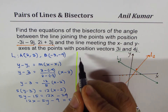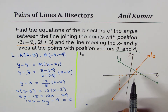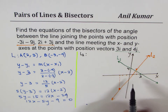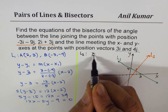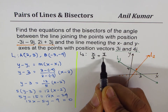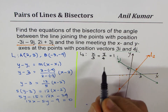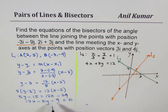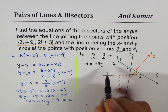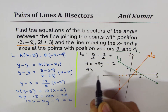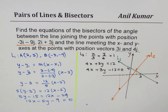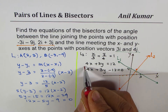Now let's find the equation for line L2. We are given two intercepts: 3 on the x-axis and 4 on the y-axis. It's good to write the equation in intercept form: x over 3 plus y over 4 equals 1. In standard Cartesian form, multiplying through by 12, we get 4x plus 3y minus 12 equals 0. So we have both equations for L1 and L2.